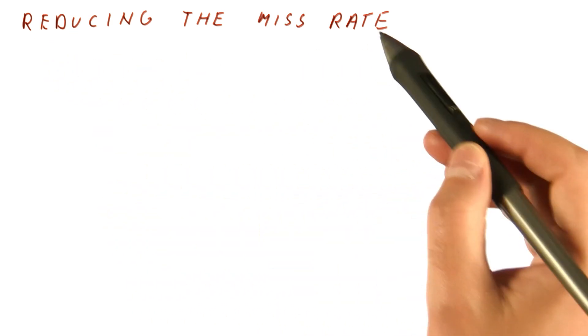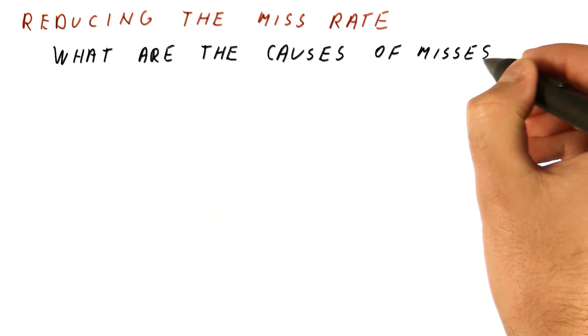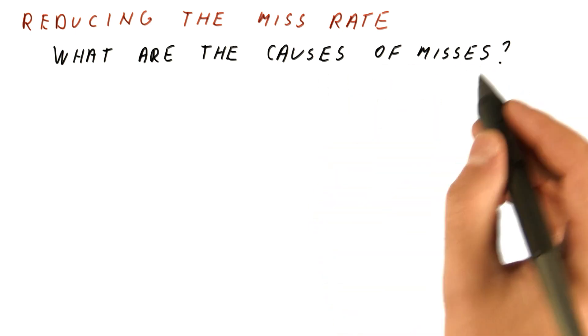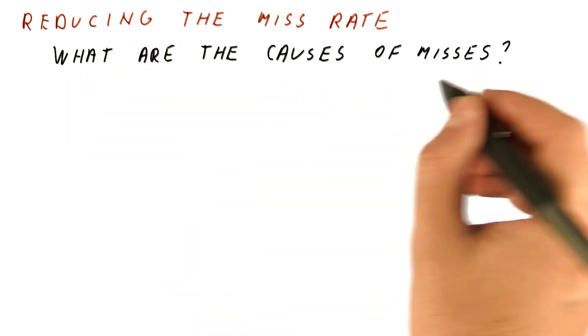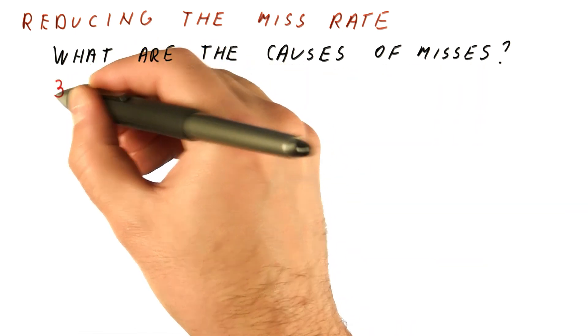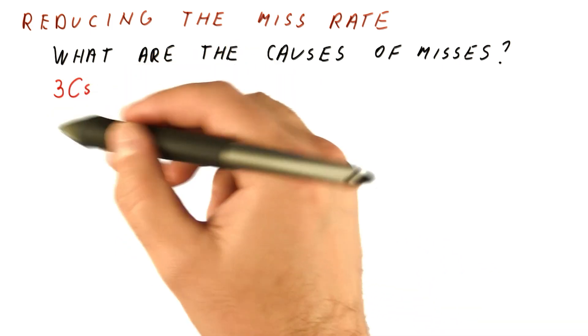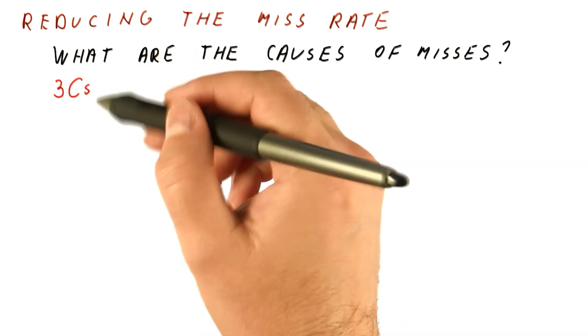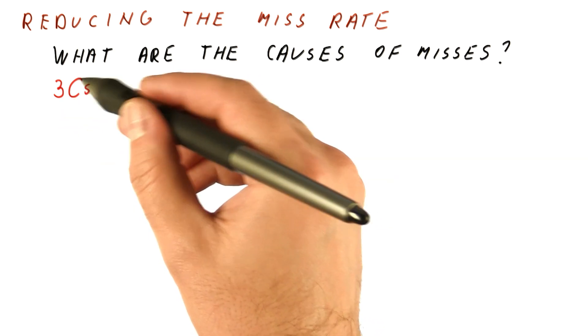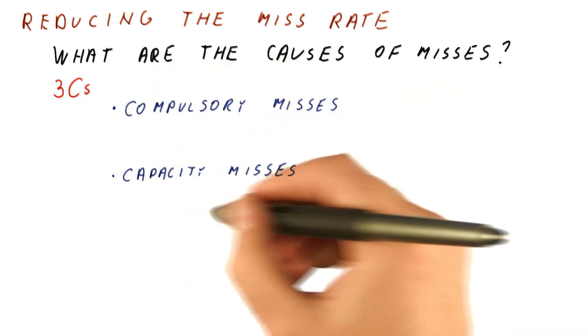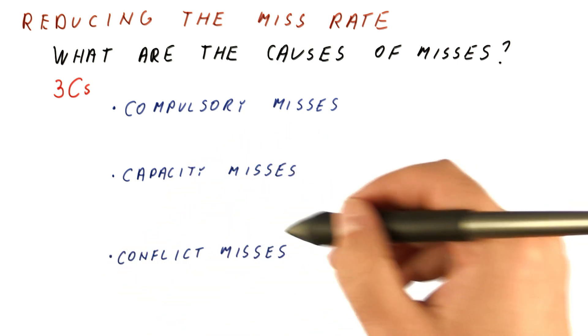In our work on reducing the miss rate, we really need to consider what are the causes of misses. The causes of misses are what we call the three Cs. You should remember this because very often we will refer to the three Cs, and you need to know that the three Cs are compulsory misses, capacity misses, and conflict misses.